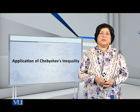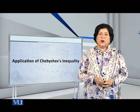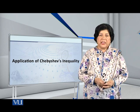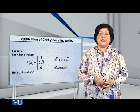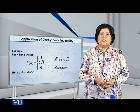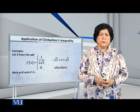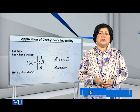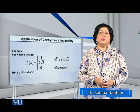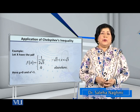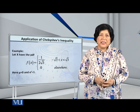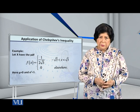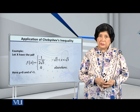Dear students, let me present to you an application of Chebyshev's inequality. Let the random variable X have the pdf: f(x) = 1 over 2√3, where x lies between minus √3 and plus √3.